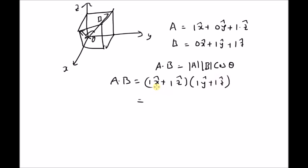So we have x hat dot y hat is 0, and x hat dot z hat is 0. The only thing left is z hat dot z hat, which is 1. Therefore, a dot b is 1.